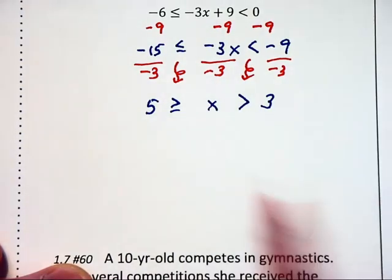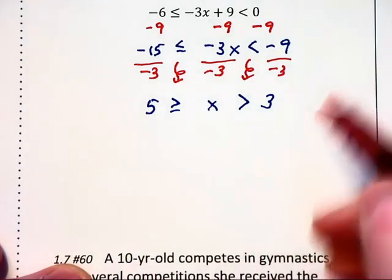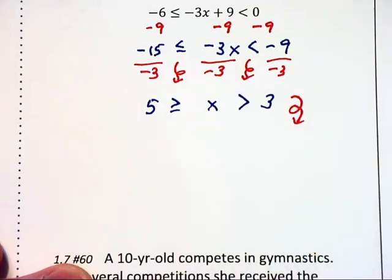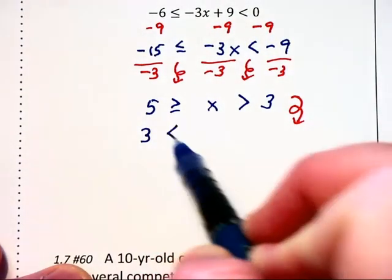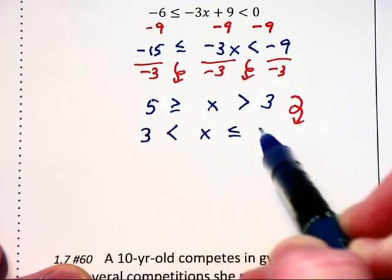And so now we have 5 is greater than or equal to x is greater than 3. Now, we don't like writing inequalities from large to small. So I'm going to rearrange this again so that we have the 3 on the left is less than x is less than or equal to 5.